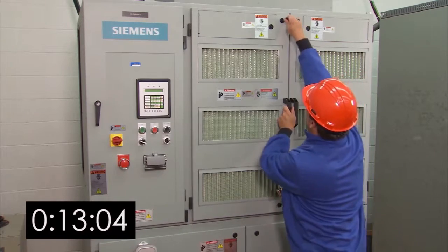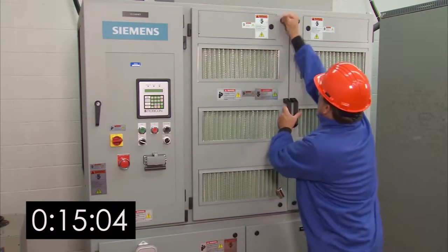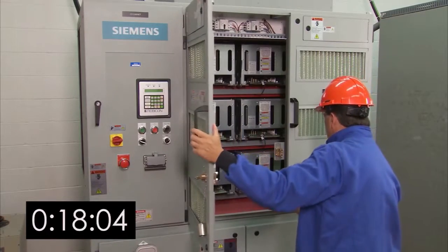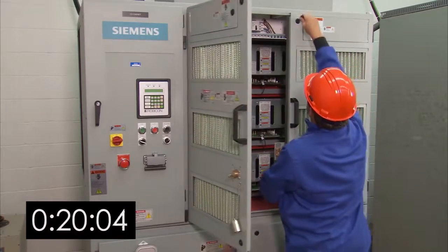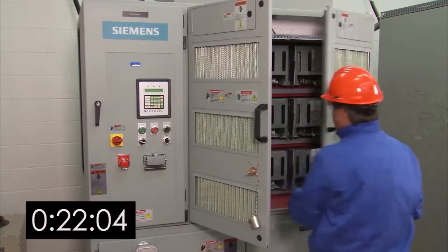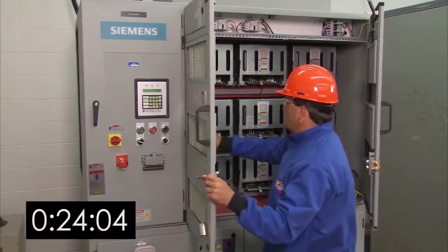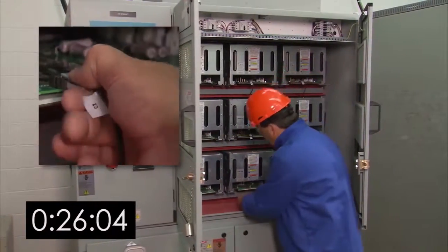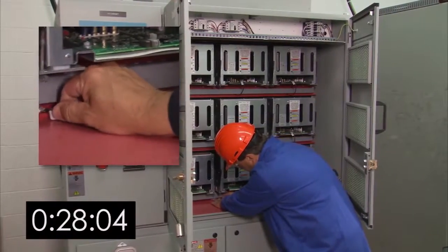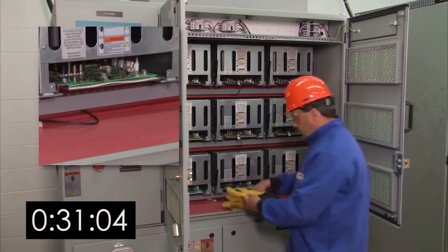Verify that all the pre-charge lights are off, then remove the fiber optic link connection. Secure it in a location where it will not be in the way when you're pulling out the cell assembly.